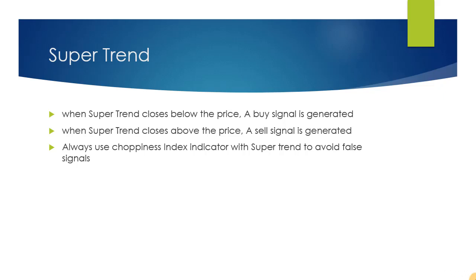Supertrend is a trending indicator and like all technical indicators it works well in trending markets. It also gives false signals in ranging or choppy markets. However, it gives fewer false signals than other indicators. So before using any indicator in your trading system you must check the choppiness of the trend.